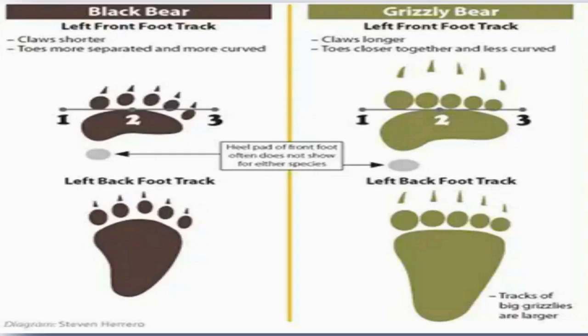Number ten: black bears tracks versus brown bears tracks. You can easily tell whether a bear is a black bear or a brown bear by looking at the bears' outside toe prints. In the left front foot track of a black bear the claws are shorter and the toes are more separated and more curved. The front feet track measures between 10.16 and 20.32 centimeters long by 8.26 and 15.24 centimeters wide. The hind feet track measures between 2.7 and 22.86 centimeters long by 8.89 and 15.24 centimeters wide, showing that the black bear's front feet are more rectangular than the hind feet.